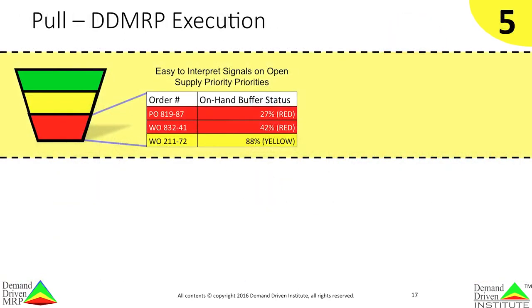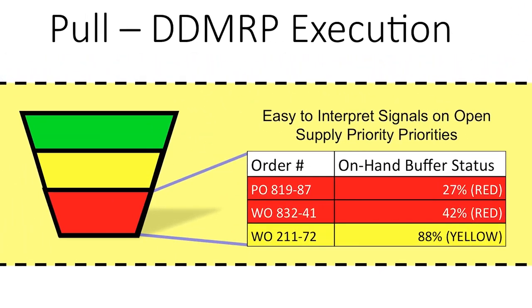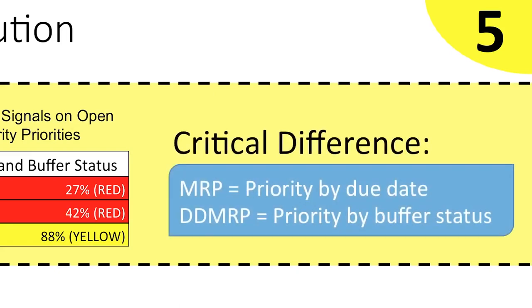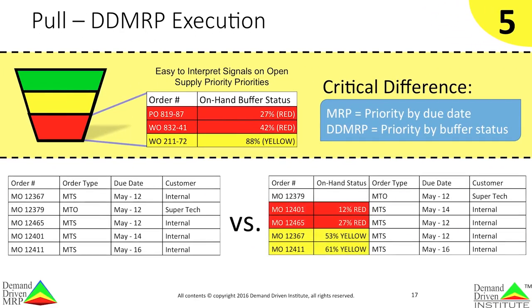This brings us to the final component of DDMRP — visible and collaborative execution. In DDMRP, execution is about the management of open supply orders. DDMRP uses easy-to-interpret signals on open supply priorities against the on-hand buffer position. The lower the on-hand level, the higher the threat to maintaining flow and the higher the execution priority. A critical difference between MRP and DDMRP is that MRP assigns priority by due date, while DDMRP assigns priority by buffer status. This will produce different views of priority — one based on arbitrary and constantly shifting due dates, while the other shows relative and real-time threats to flow that is both highly visible and intuitive.